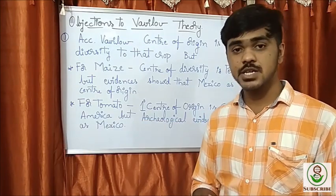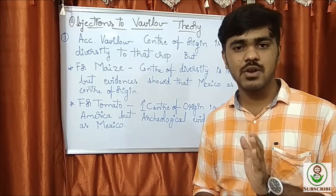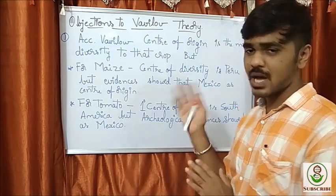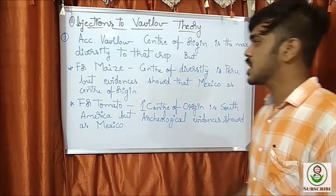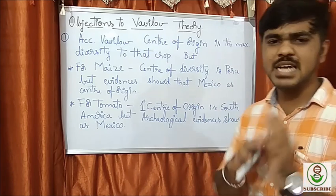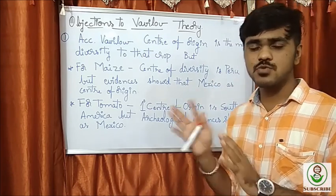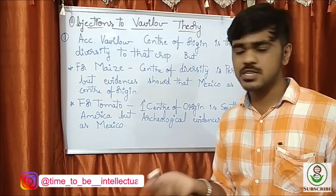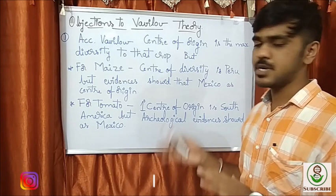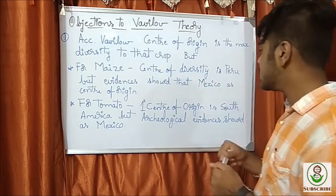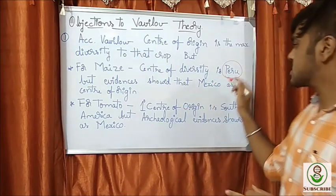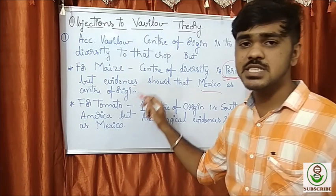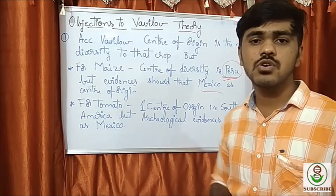Now we shall see the objections that arose against Vavilov's theory. According to Vavilov, the center of maximum diversity is the center of origin for that crop — that is the primary center of origin. However, for maize, he said Peru was the center of maximum diversity. But evidence showed that Mexico is actually the center of origin for maize, making his theory incorrect in this case.